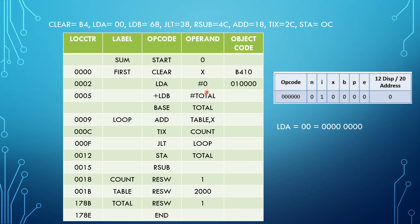Next we have LDA #0, which is a Type 3 instruction format. In Type 3, the opcode consists of 8 bits, followed by NIXBPE bits (each 1 bit) and a 12-bit displacement. N represents indirect addressing mode, I represents immediate addressing mode, X represents index addressing mode, B represents base relative, P represents program counter relative, and E=0 means Type 3, E=1 means Type 4. The LDA mnemonic value is 00, and I is set to 1 because it is immediate addressing mode, with no displacement. The object code is 010000.